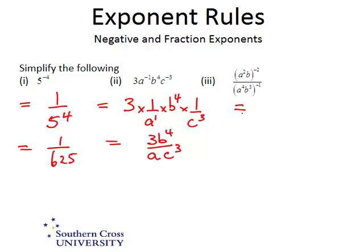Question 3. Now you've got a choice here. There's two ways to do this. As a rule of thumb, I would generally just raise everything inside the brackets to the exponent that's outside. So a squared to the power of minus 2 is a to the 2 times negative 2, which is negative 4. b to the 1 times negative 2 is negative 2. Over a to the 4 times negative 1, which is a to the negative 4. Over b to the 3 times negative 1, which is b to the negative 3.